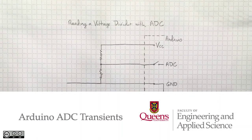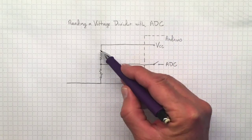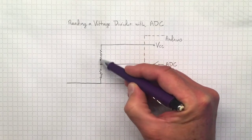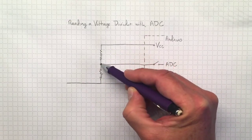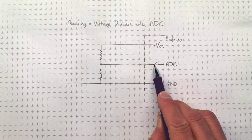If we want to read a voltage divider circuit with our Arduino's analog-to-digital converter, we'll hook it up something like this. We'll go from the power supply voltage to ground through two resistors in series, and then we'll be able to read from the middle between those two resistors into our analog-to-digital converter.